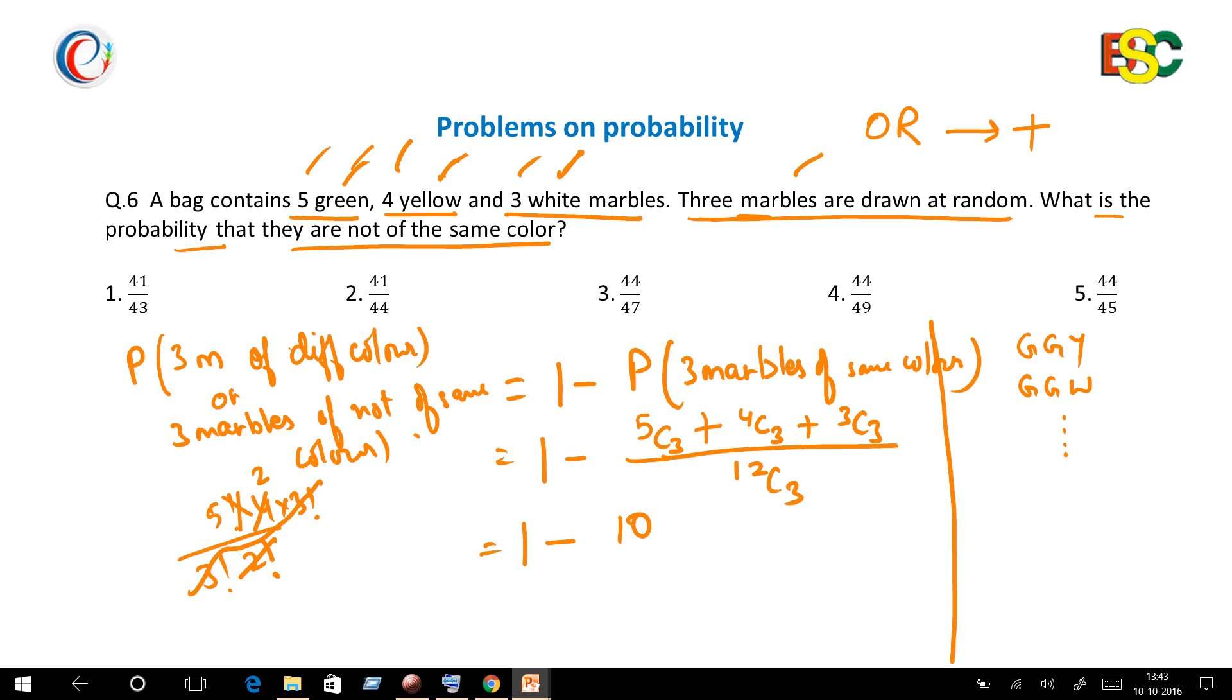Then 12C3 is 12 times 11 times 10 over 3 factorial. Then you will get—since 3 factorial is 6—2 sixes are 12.